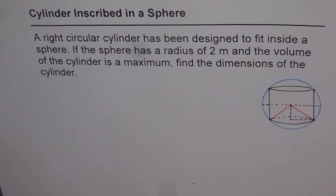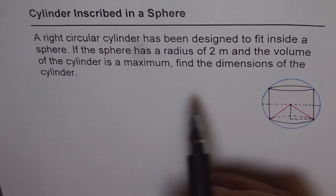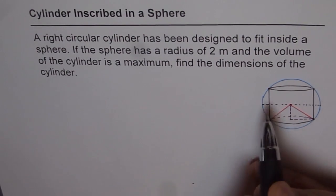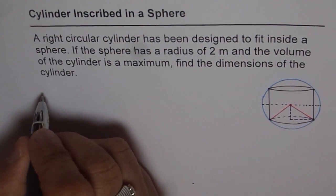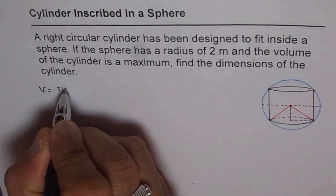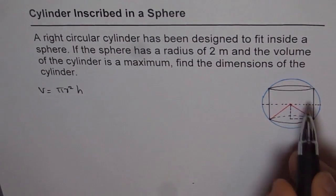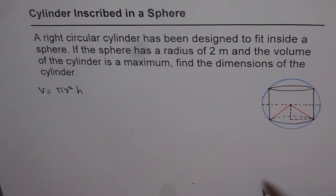In this series we have a couple of geometrical problems where one shape is inscribed into the other. We need to figure out an equation which can relate things given with things to be found. Here we want to find the maximum volume of a cylinder. Volume of a cylinder is given by πr²h, where πr² is the area of the base and h is the height of the cylinder.